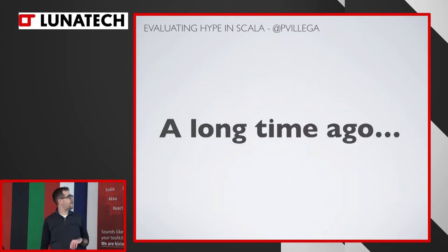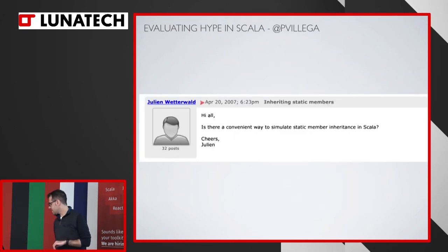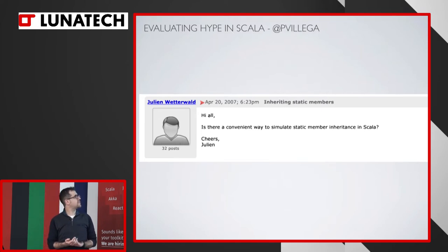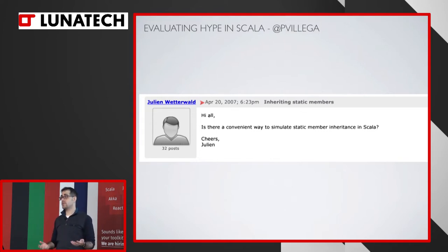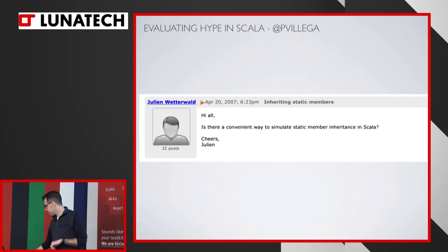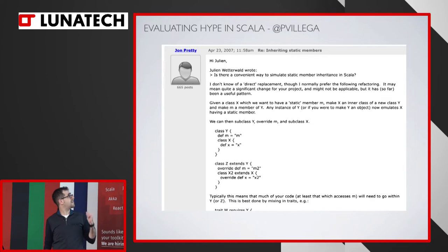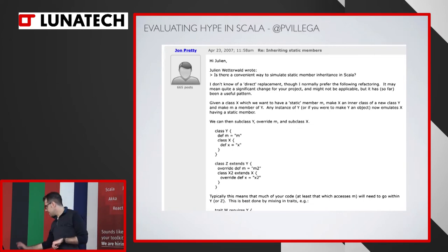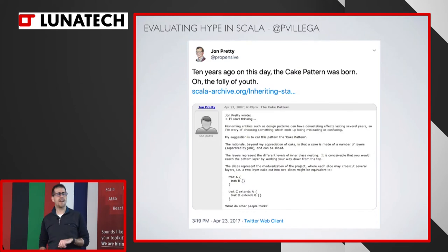So let's go really, really long back in time — to 2007, April 20, 2007. In the Scala Forum at that time, somebody was asking for a way to simulate static member inheritance in Scala, which in other words, somebody was asking for a pattern to do Dependency Injection in an idiomatic way so a new developer joining the team would understand it. Somebody you may know — John Pretty — gave a solution, and that day the Cake Pattern was born.